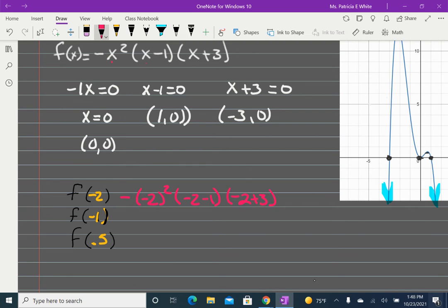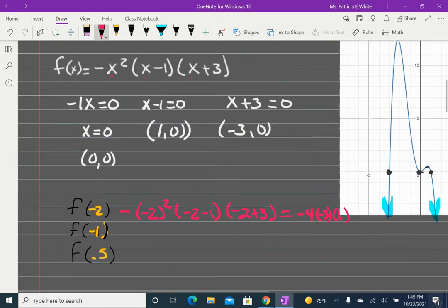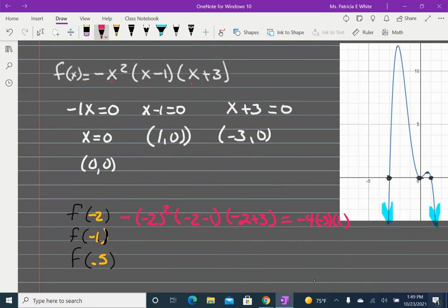So negative (-2) squared times (-2 minus 1) times (-2 plus 3). Plugging in my negative 2's. That's going to give me negative 4 times negative 3 times 1, giving me 12. So at (-2, 12) up there.